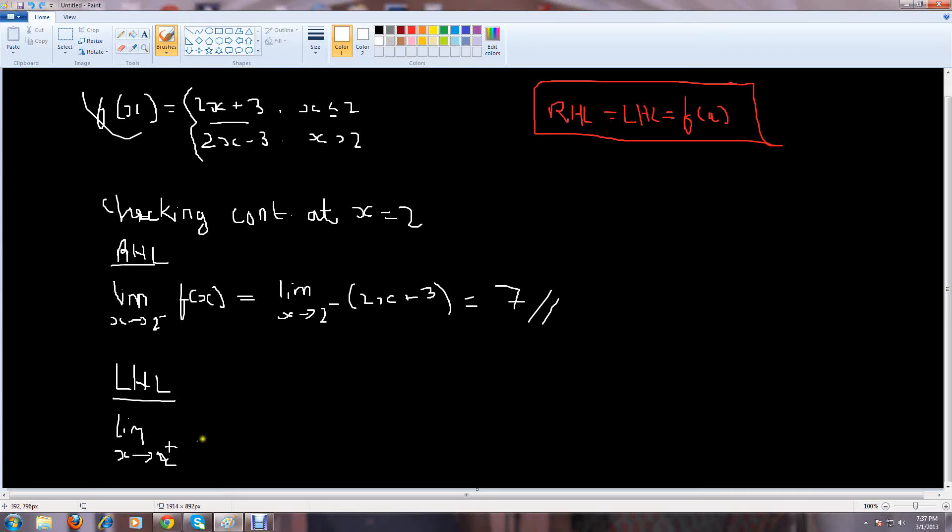So, basically, now, 2 plus means that a limit which has a value greater than 2. In this case, it is 2x minus 3. So, here, you need to put f of x. And here, in this case, f of x is nothing but 2x minus 3. So, here, 2x minus 3. Now, again, put the value of x as 2. 4 minus 3 is 1.